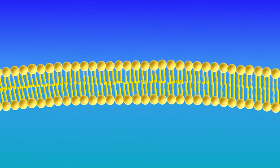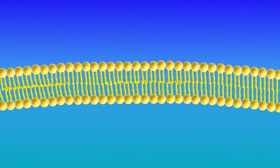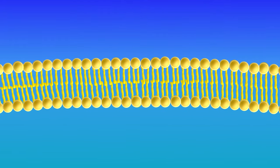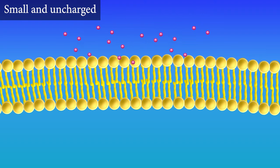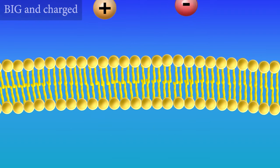The phospholipid bilayer is the main component of the membrane, and it is largely responsible for making the membrane semi-permeable. Basically, the smaller and less charged something is, the easier it is to pass through the phospholipid bilayer. The bigger, more charged things have a harder time.